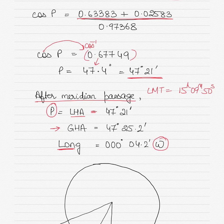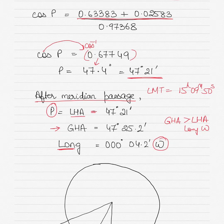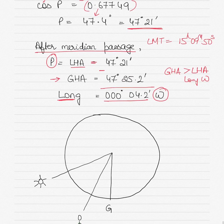The longitude is the difference between GHA and LHA. The rule is: GHA greater than LHA means longitude is west; GHA less than LHA means longitude is east. Here GHA is greater than LHA, so longitude is west, and the difference is 0 degrees 4.2 minutes west.